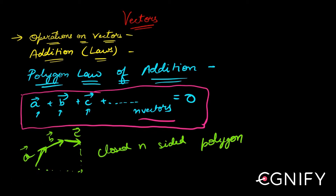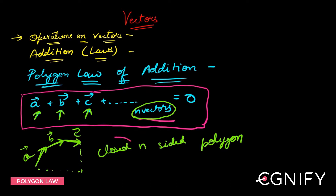The sides of this polygon are your vectors — a-bar, b-bar, c-bar, and all n vectors in the expression. They are the sides of your polygon. If you join these vectors from head to tail, your polygon has to be closed.